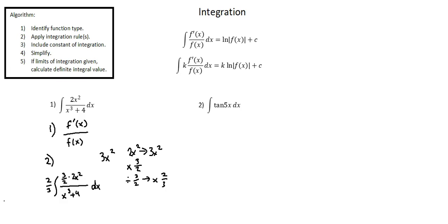Multiplying by 2 thirds and 3 halves doesn't change the value — I don't want to change the value, I want to change the format. Notice in the numerator I can now cancel the divide by 2 and multiply by 2, leaving 3x squared. That is the derivative of the denominator x to the power of 3 plus 4. Now I can apply my rule, and my final answer is 2 thirds times the natural log of the absolute value of x to the power of 3 plus 4.